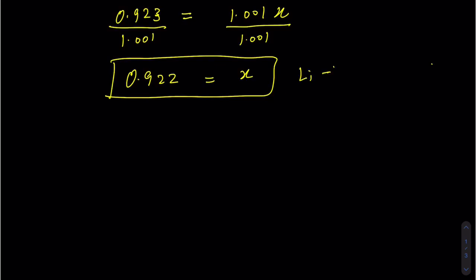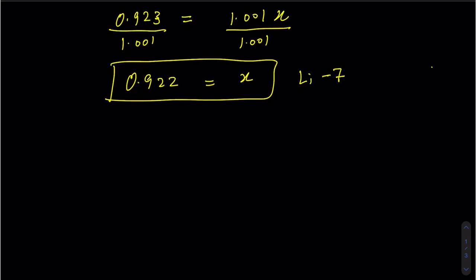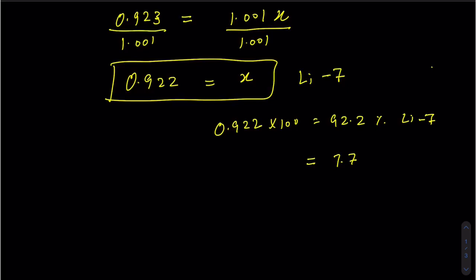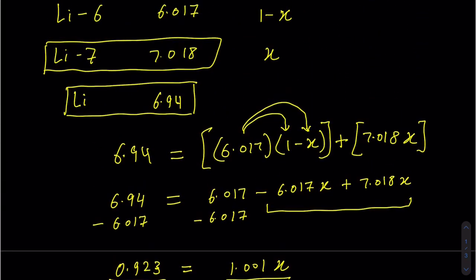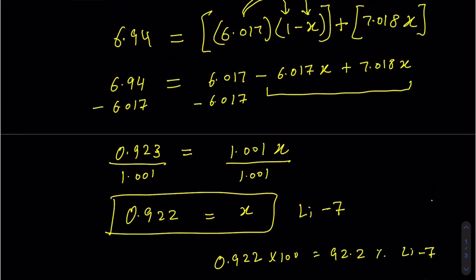So x = 0.922 belongs to lithium-7, since x represented the heavier isotope. To convert to a percentage, multiply by 100: lithium-7 is 92.2%. Therefore lithium-6 is 100 − 92.2 = 7.78%. This confirms our earlier prediction that lithium-7 is the most abundant, consistent with the atomic mass of 6.94 being closer to 7 than to 6.